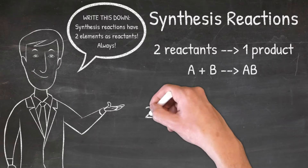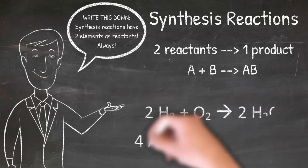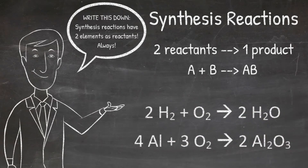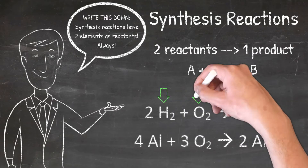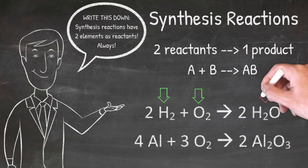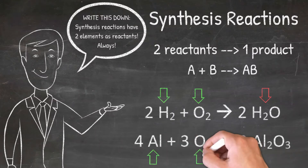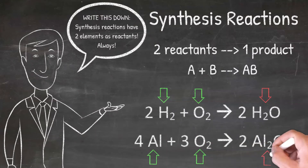In the example shown here, you can see the two reactants and one product in each reaction. The first reaction shows H2 and O2 as the two reactants and H2O as the one product. The second example shows Al and O2 as the two reactants and Al2O3 as the one product. Whenever you have two reactants and one product, you have a synthesis reaction.